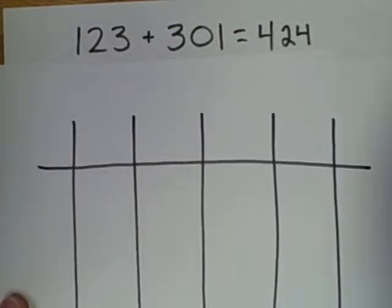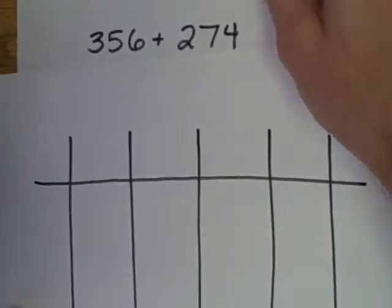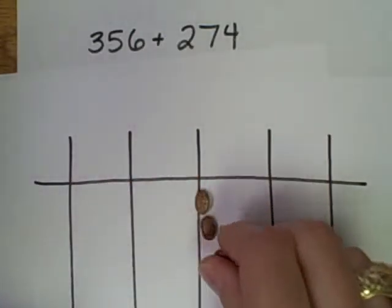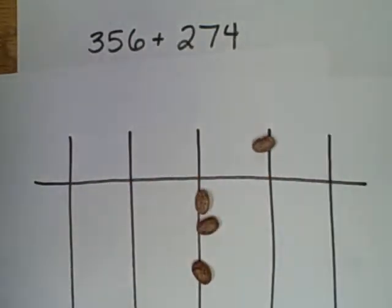This gets more complicated. Here's the next problem, 356. 356 is five and one.